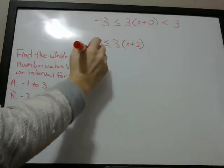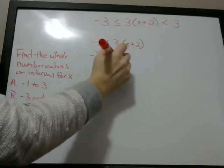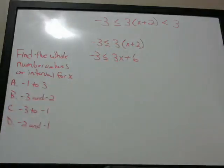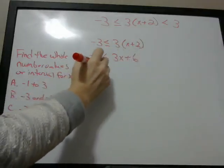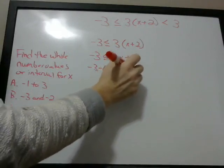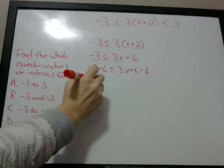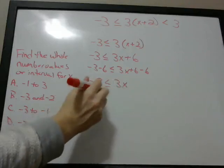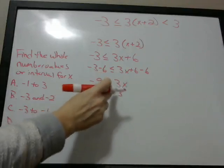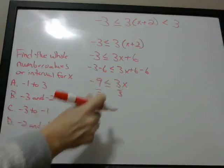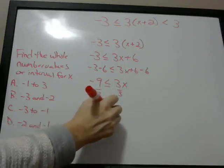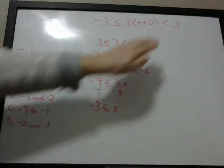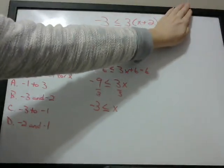So we're first just going to distribute: negative 3 is less than or equal to 3x + 6, which is 3 times x plus 3 times 2. Now we're going to solve for x. We need to get rid of the 6, so we subtract 6 from each side, and we end up with negative 9 is less than or equal to 3x. We need to get rid of the 3, so we divide by 3 on each side. Since we're dividing by a positive number, we don't need to do anything with the sign. So we have negative 3 is less than or equal to x — meaning x is greater than or equal to negative 3.